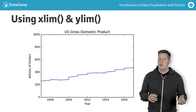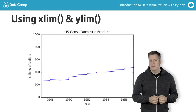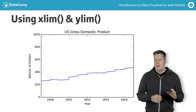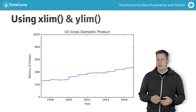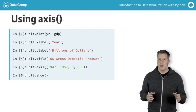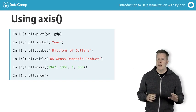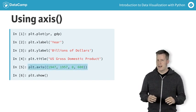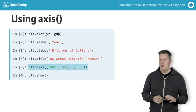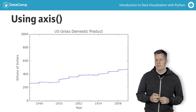We could zoom in vertically even more in principle. Now we'll set the horizontal limits and the vertical limits all at once, replacing the calls to Xlim and Ylim by a single call to axis. This gives the same plot as before.